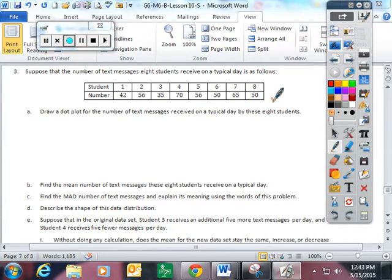The first section asks us to draw a dot plot for the number of text messages received on a typical day with eight students. I'm going to draw my line for the dot plot. Dot plots are also frequently known as line plots. The number of texts range from 35 to 70, so I'm going to start there, kind of scale 35 to 70, and I'm going to decide to count by fives.